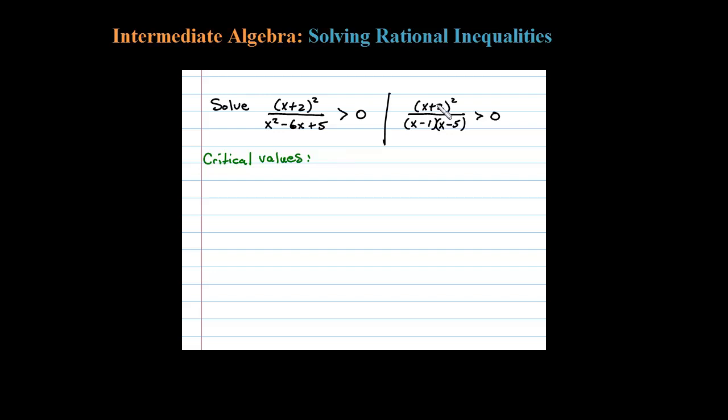So what makes the numerator 0 here is x = -2. Okay, that's actually a double root. What makes the denominator 0 by inspection here is x = 1 and x = 5.